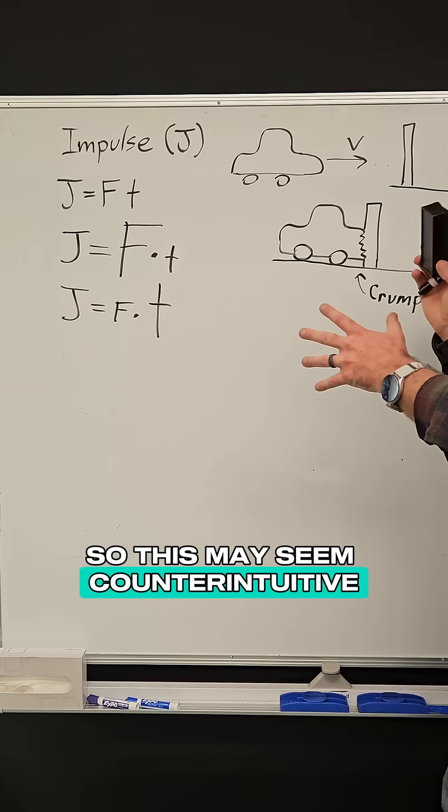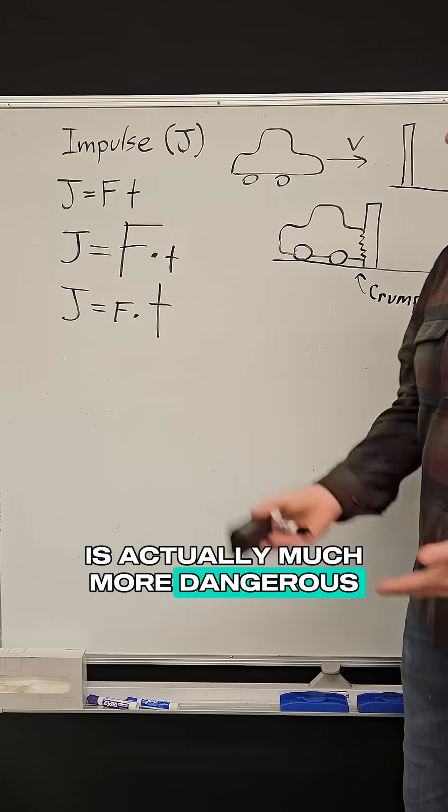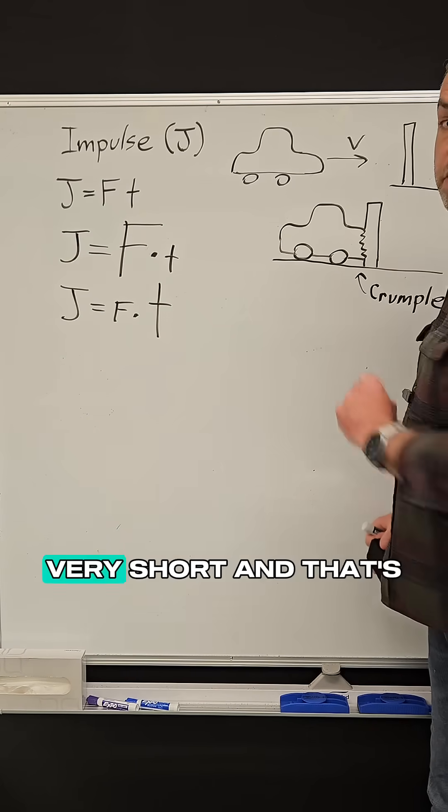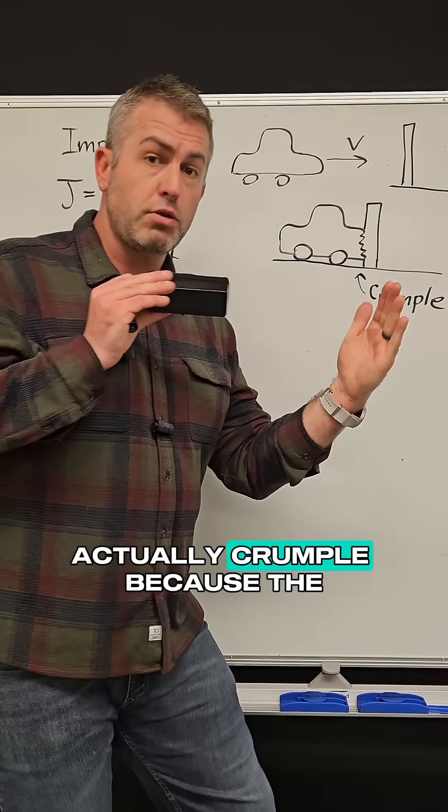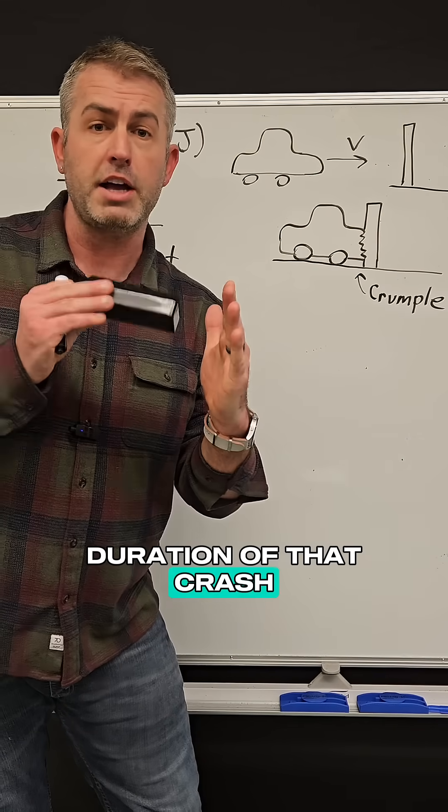So this may seem counterintuitive, but a bumper crash is actually much more dangerous because the force is very large due to the impact time being very short. And that's the principle of impulse, and that's why it's better to have a bumper actually crumple - because the goal here is to extend the duration of that crash.